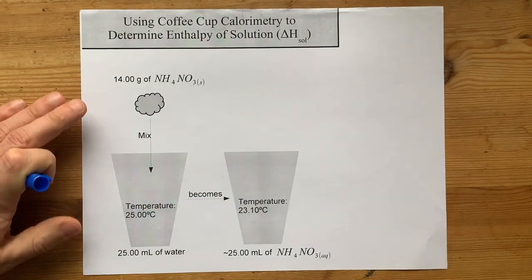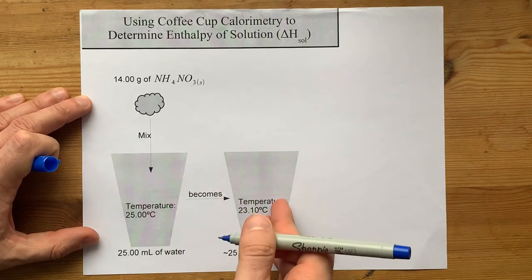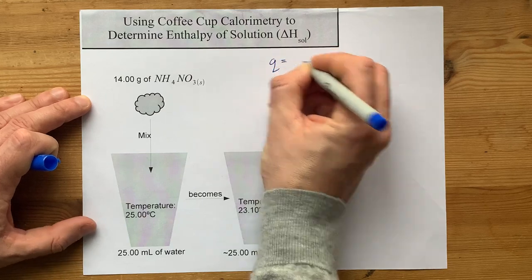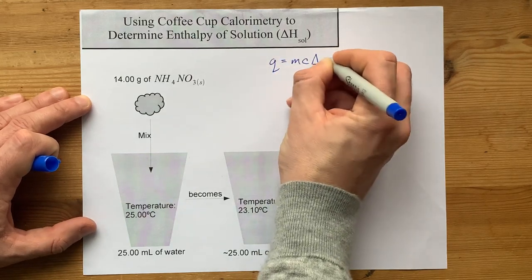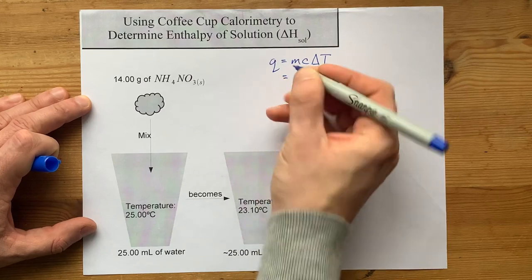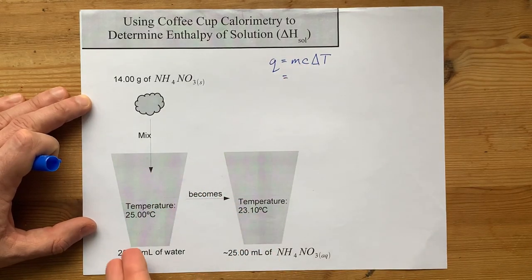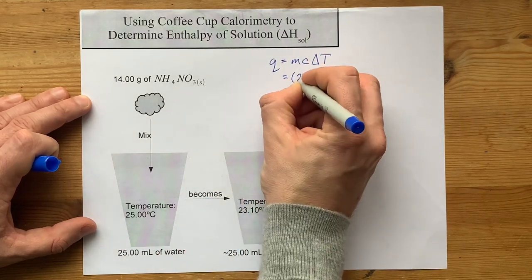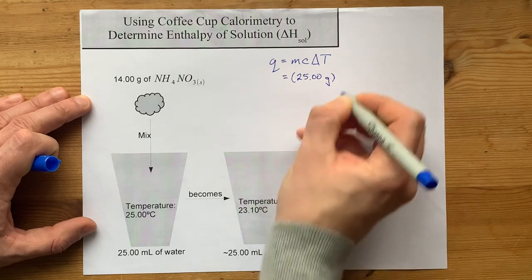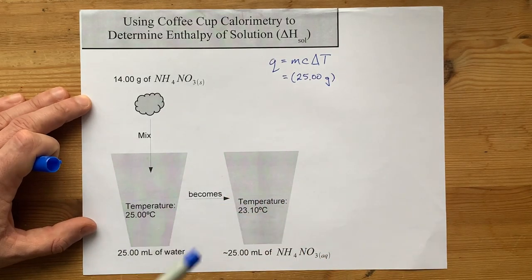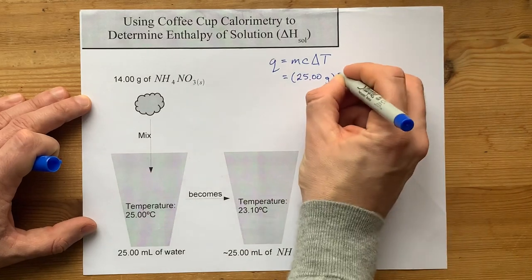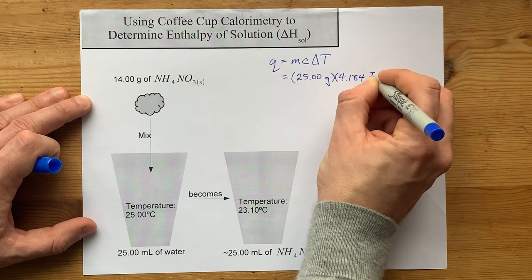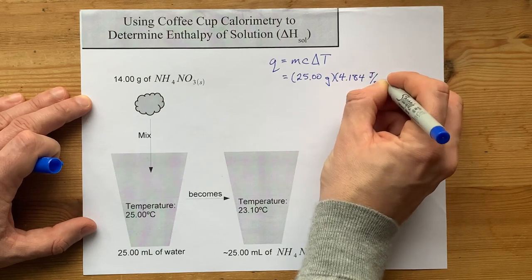So let's get down to business here. Let's figure out how much heat was either released or absorbed in this process. Amount of heat, Q, is measured with mc delta T. M here is the mass of the thing that is heating up. That's water for us, and it's 25 milliliters, which counts as 25 grams, because water is 1 gram per milliliter around room temperature. C is the specific heat capacity of water. That's 4.184 units of joules per gram degree Celsius. Notice that the grams here match as a unit.